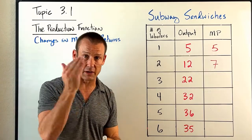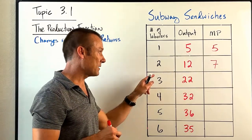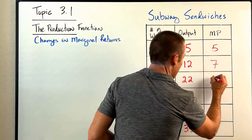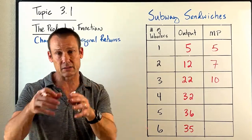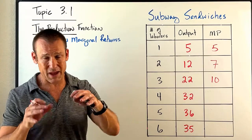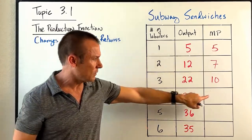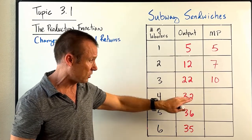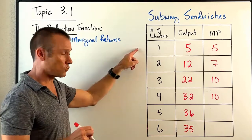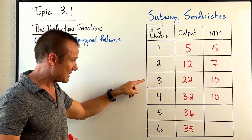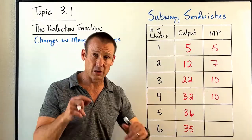Hiring the third person gives even more specialization — one on meat, one on veggie, one handling checkout, phone, and restocking. Output goes from 12 to 22, so marginal product is 10. Still increasing marginal returns. With the fourth worker we have specialization but also a little downtime, so output goes from 22 to 32 — marginal product is 10 again. That means we're getting constant marginal returns on the fourth person.